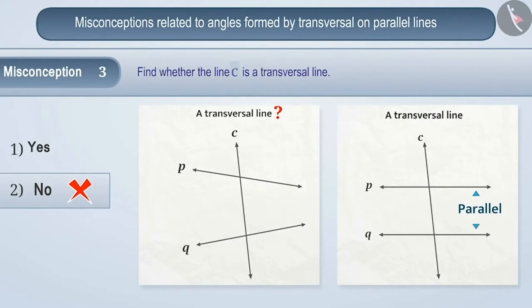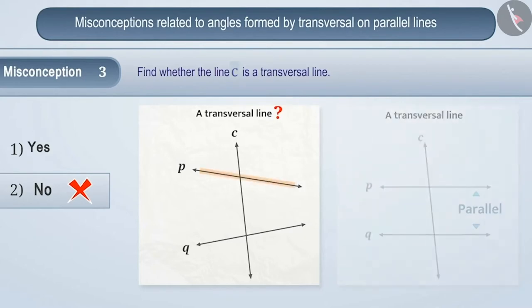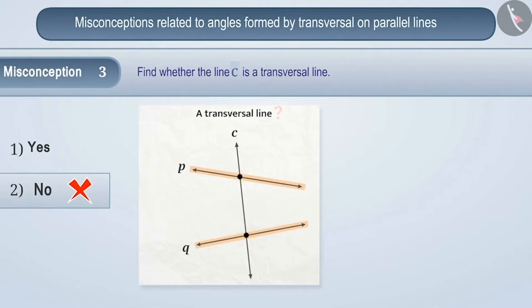Keep in mind that it is not necessary for the two lines intersected to be parallel. If any two lines are intersected by a third line, then it is called a transversal. Therefore, line C here is a transversal.